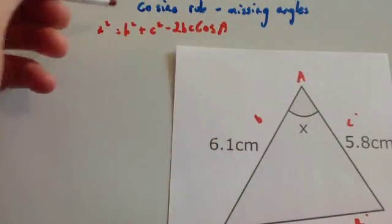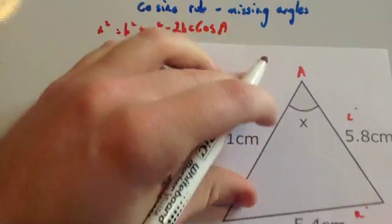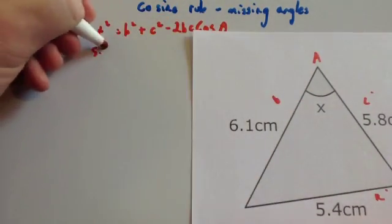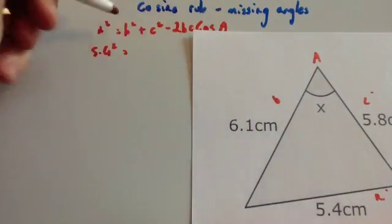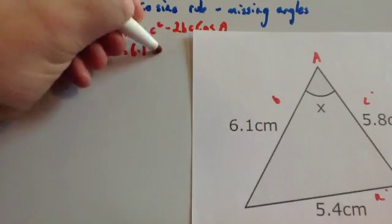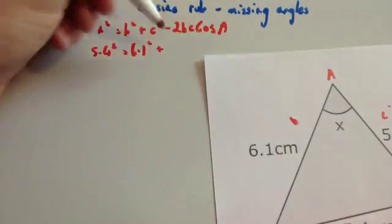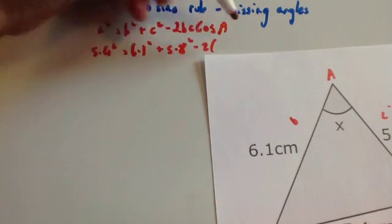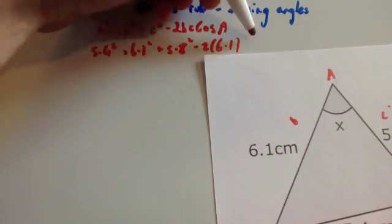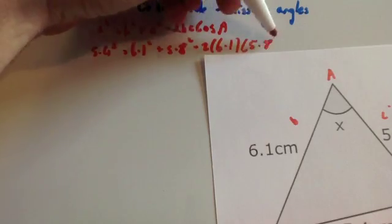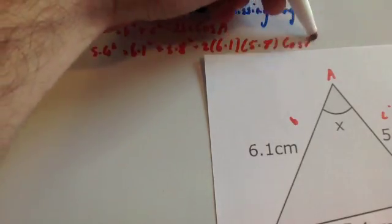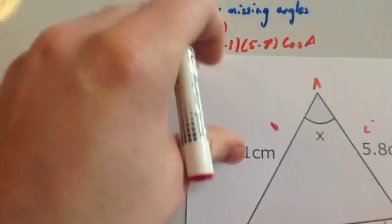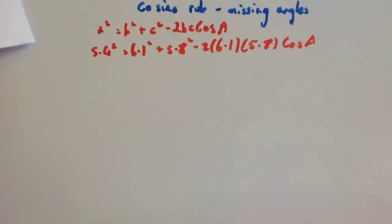Let's substitute those in. So a² is 5.4² = b², which is 6.1² + c², which is 5.8² - 2 × 6.1 × 5.8 × cos of the angle A, that's what we're trying to find out, cos x. Let's work out this.